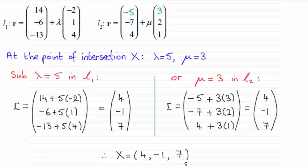And the way we do this is that in the previous part of the question we established that lambda would equal 5 or mu would equal 3 at the point of intersection X. So you can take either lambda equaling 5 and substitute it into L1 or you can take mu equals 3 and substitute it into L2.